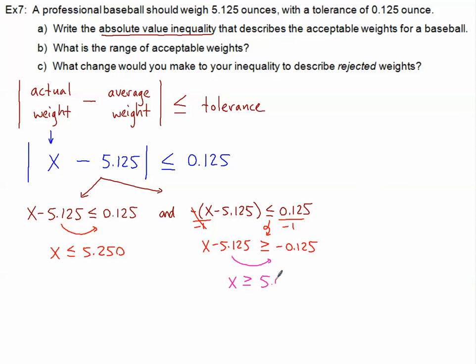And then, when I add the 5.125 here, I will have 5.000. So these are our acceptable ranges. Remember, this is one and the other.